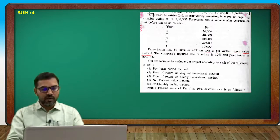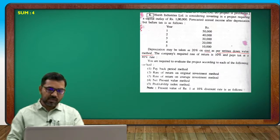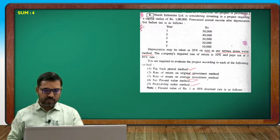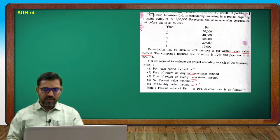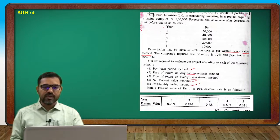You are required to evaluate the project according to each of the following methods: Payback Period method, Rate of Return on original investment, Average investment, Net Present Value method, and Profitability Index method at 10% rate. The project life is 5 years.